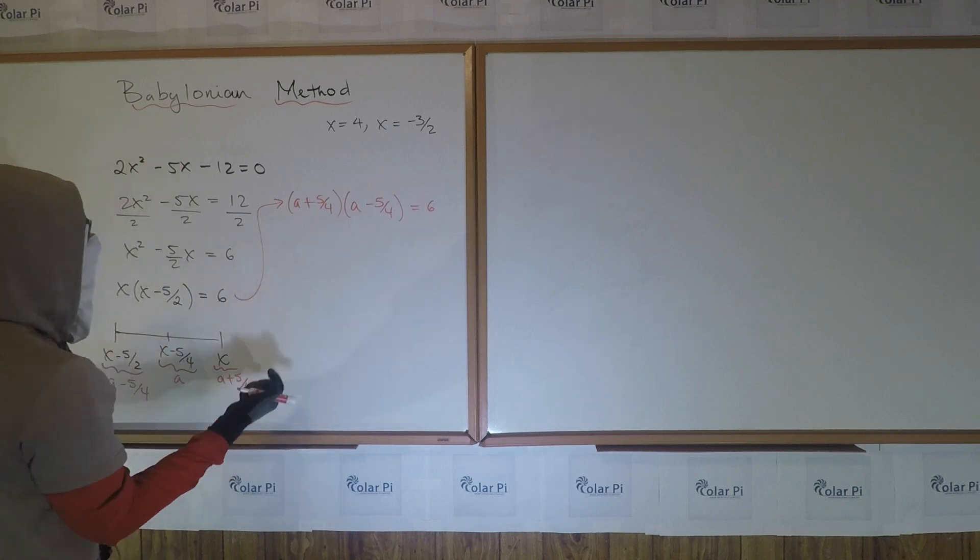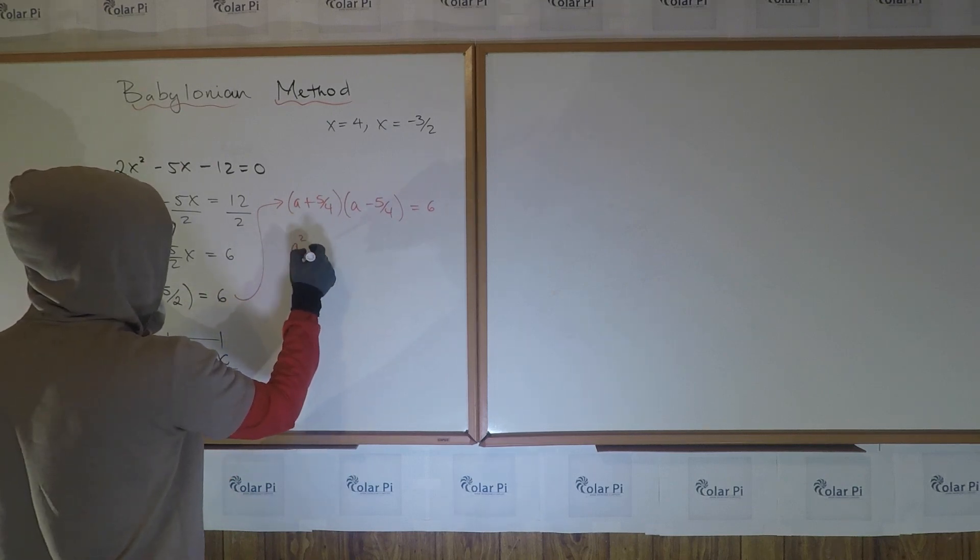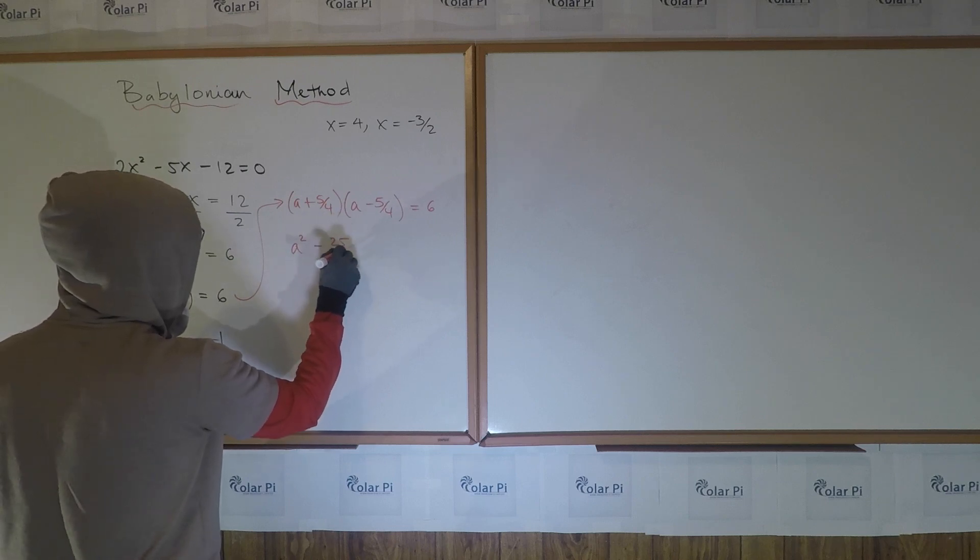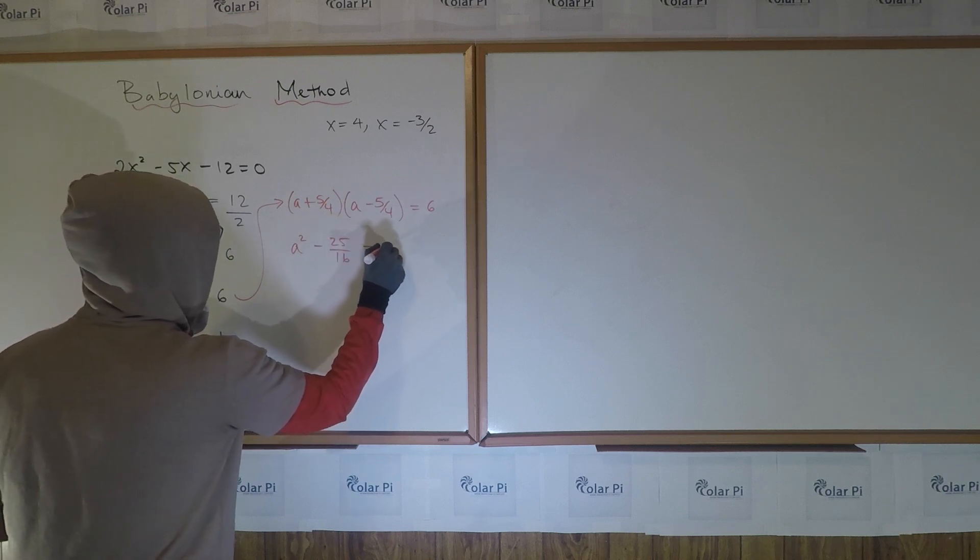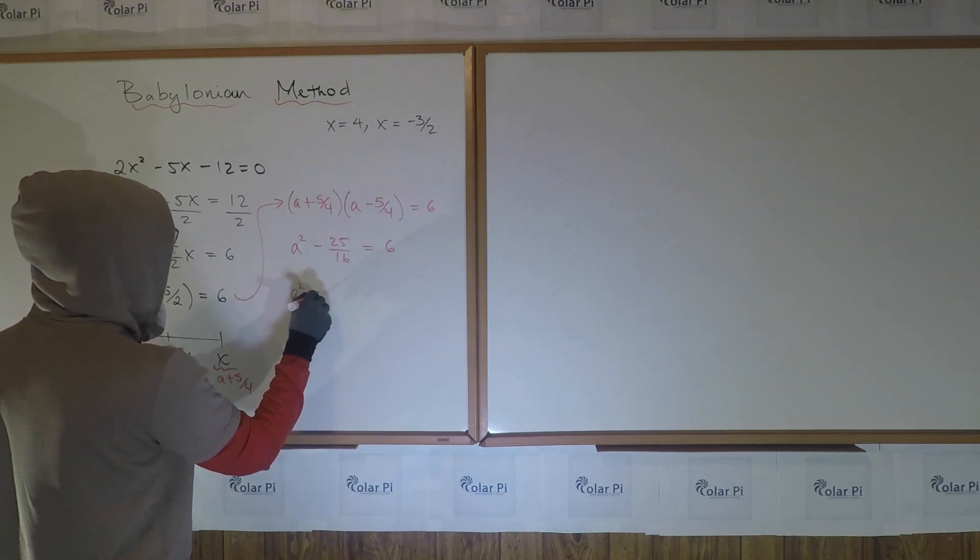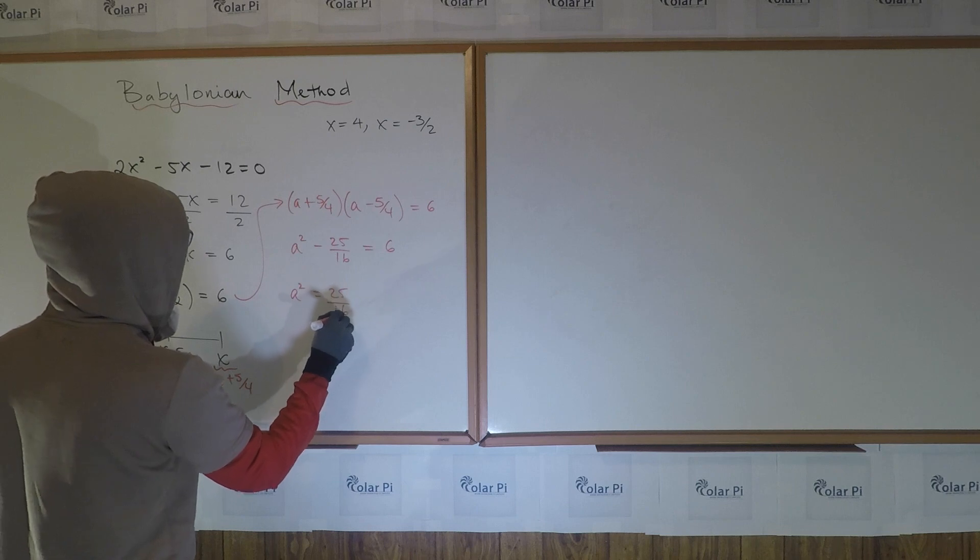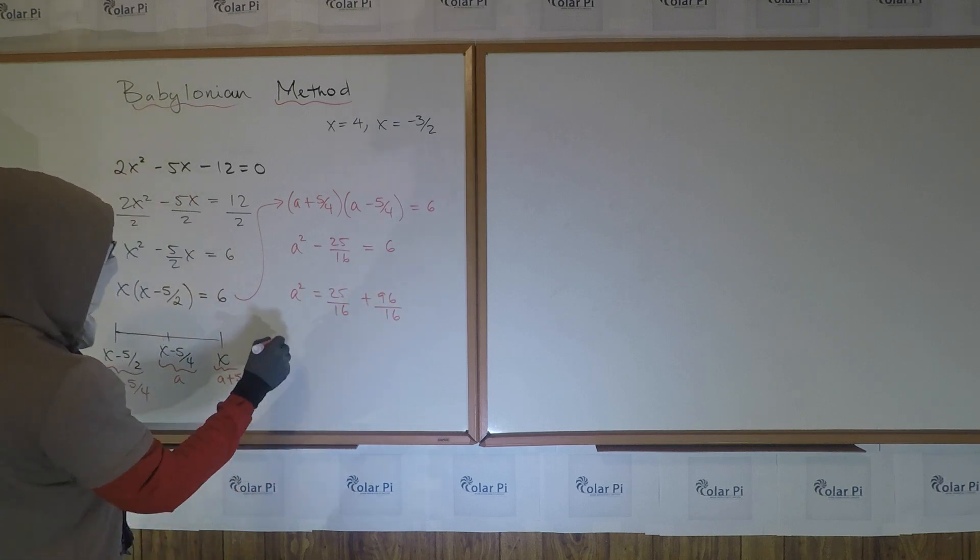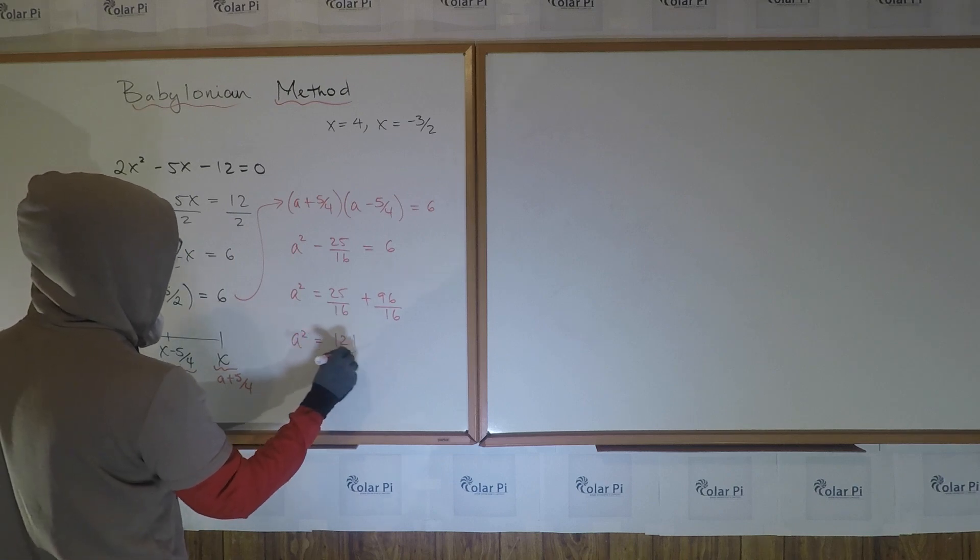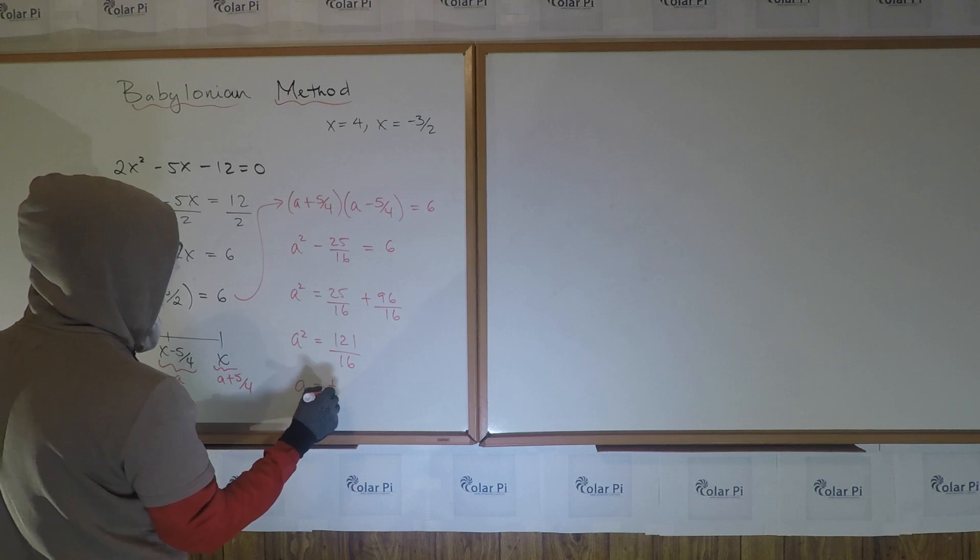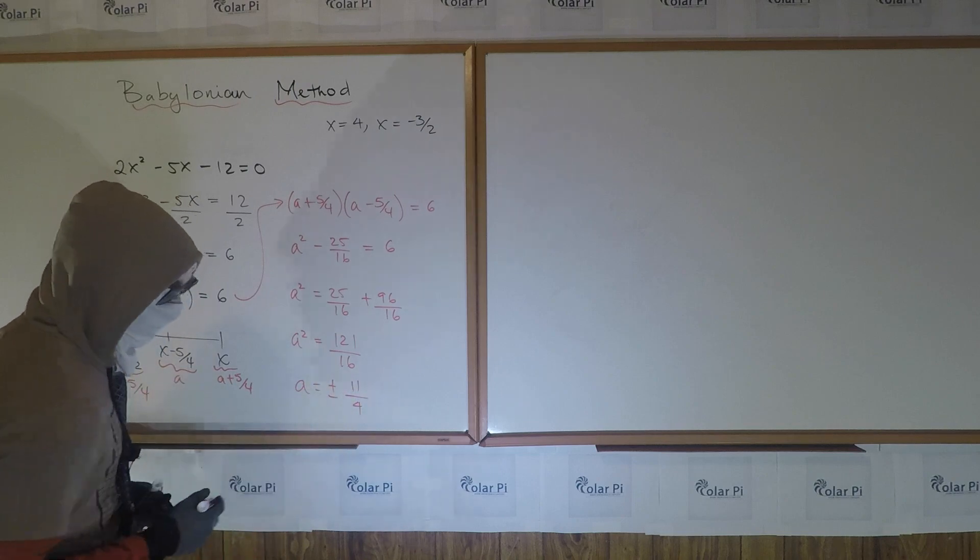Multiply these two. Like we said, we need to get a difference of squares. So that's a² - (5/4)² = 25/16 = 6. And then, from here, solve for a, meaning a² = 25/16. And 6 is 96/16. And so, a² = 121/16. So a is equal to plus or minus the square root of 121/16, which is ±11/4. Cool.